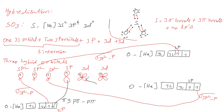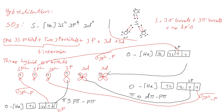The 3d orbital of sulfur and the p orbital of oxygen undergo lateral overlapping to give a pi bond. This pi bond is formed by sulfur's d orbital and oxygen's p orbital, so it is called a d-pi–p-pi bond. Another 3d orbital of sulfur and another p orbital of oxygen also form a d-pi–p-pi bond.